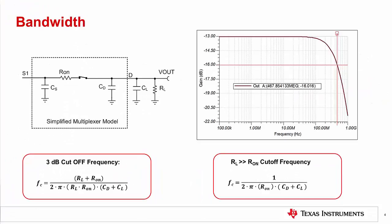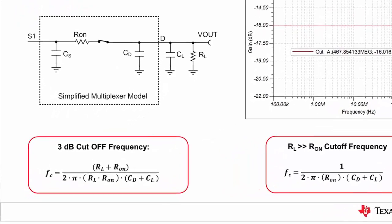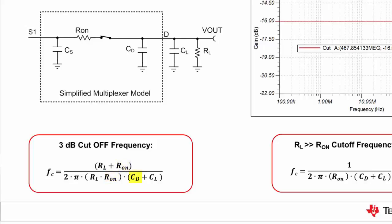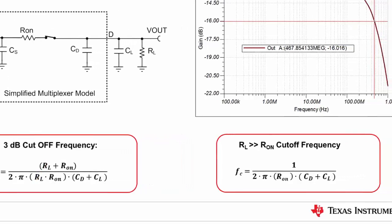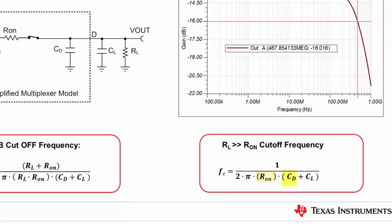From the equation for the multiplexer 3 dB cutoff frequency, it is clear that the multiplexer's bandwidth depends on the on resistance R on. When the output is interfaced with a high input impedance stage to avoid gain errors, we can say that RL is much greater than R on, so R on in the numerator can be ignored and RL will cancel out. This yields a simplified equation that considers only R on, CD, and CL. Increasing the value of R on, CD, and CL will decrease the multiplexer bandwidth.